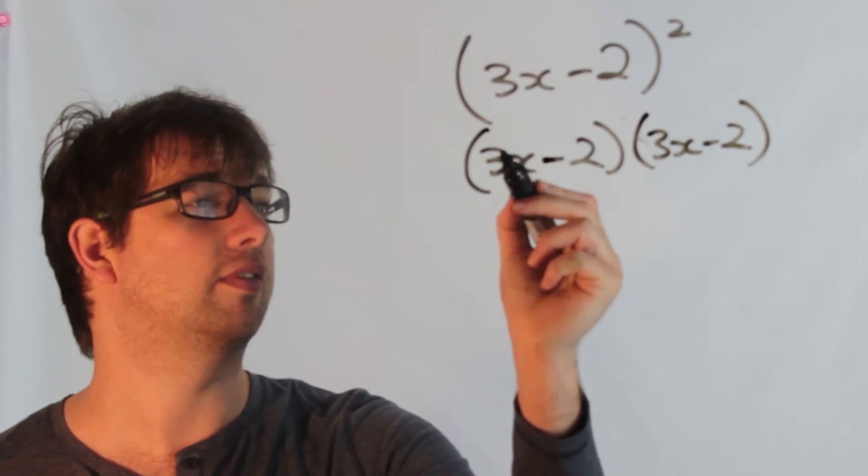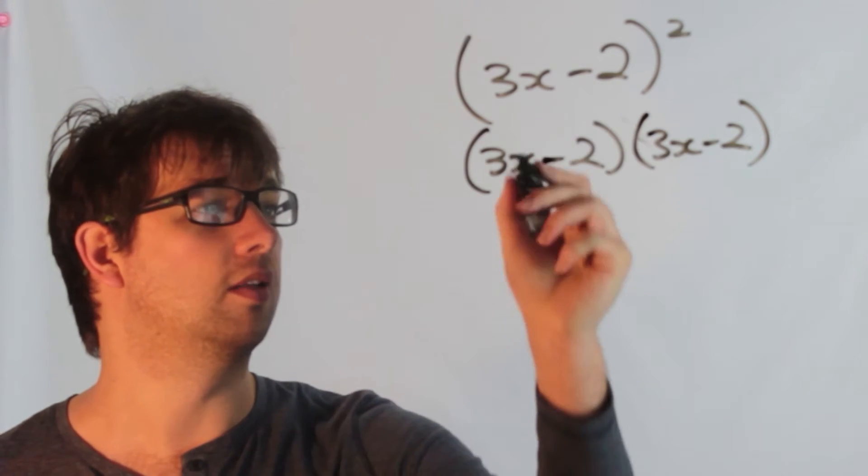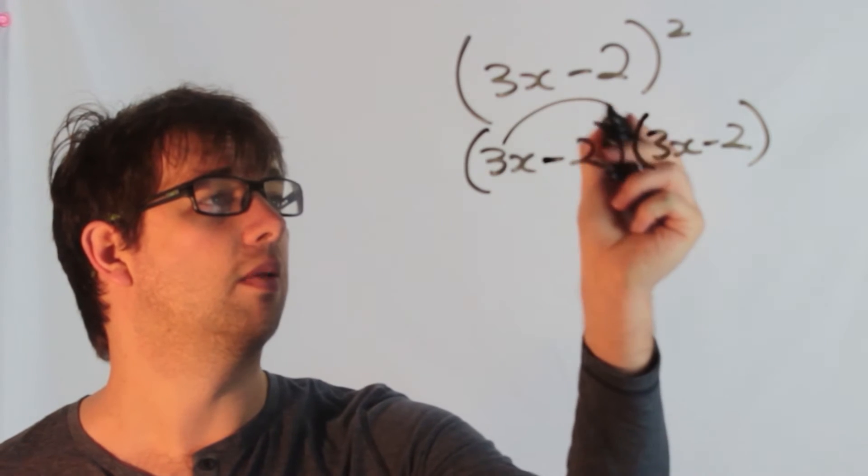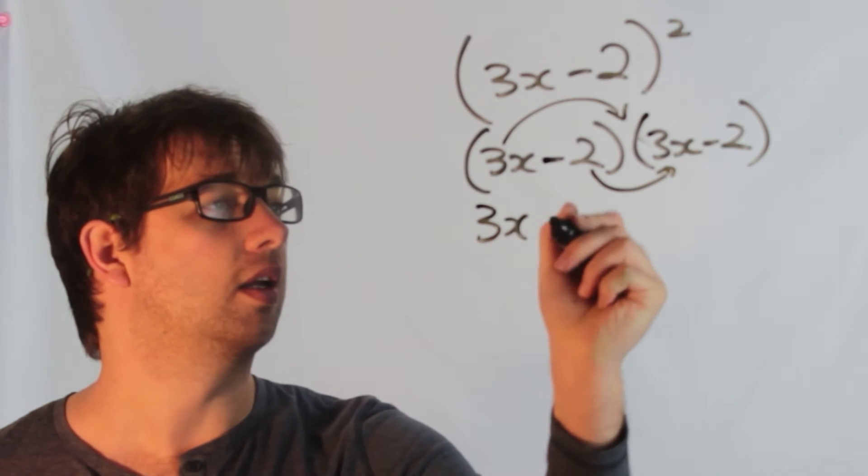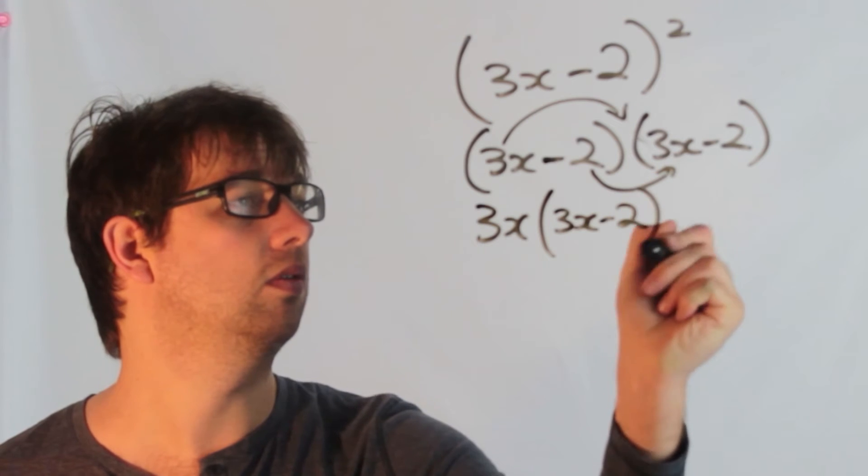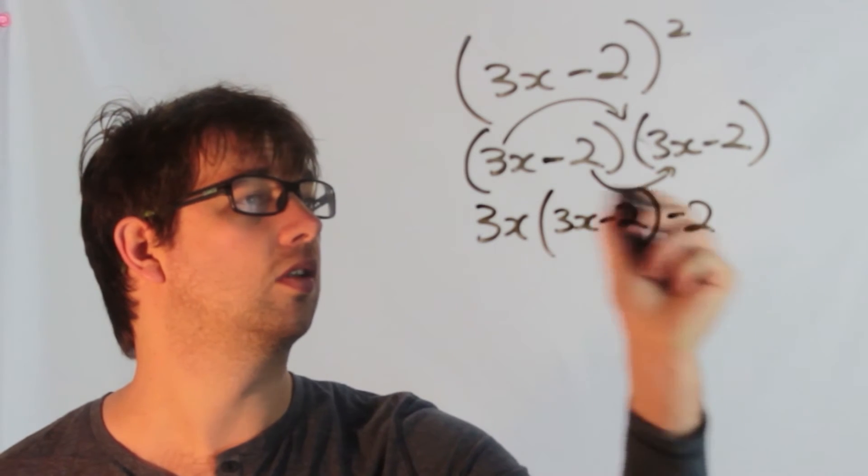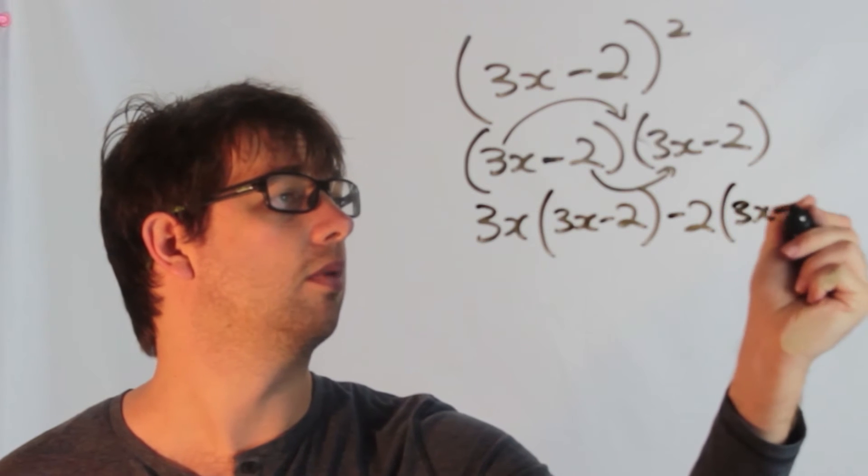So we can expand a number of different ways using foil or doing each bit individually. So this one by this bracket and then this one by the bracket. So 3x multiplied by the bracket, 3x minus 2. And then we've got minus 2 times the bracket, 3x minus 2.